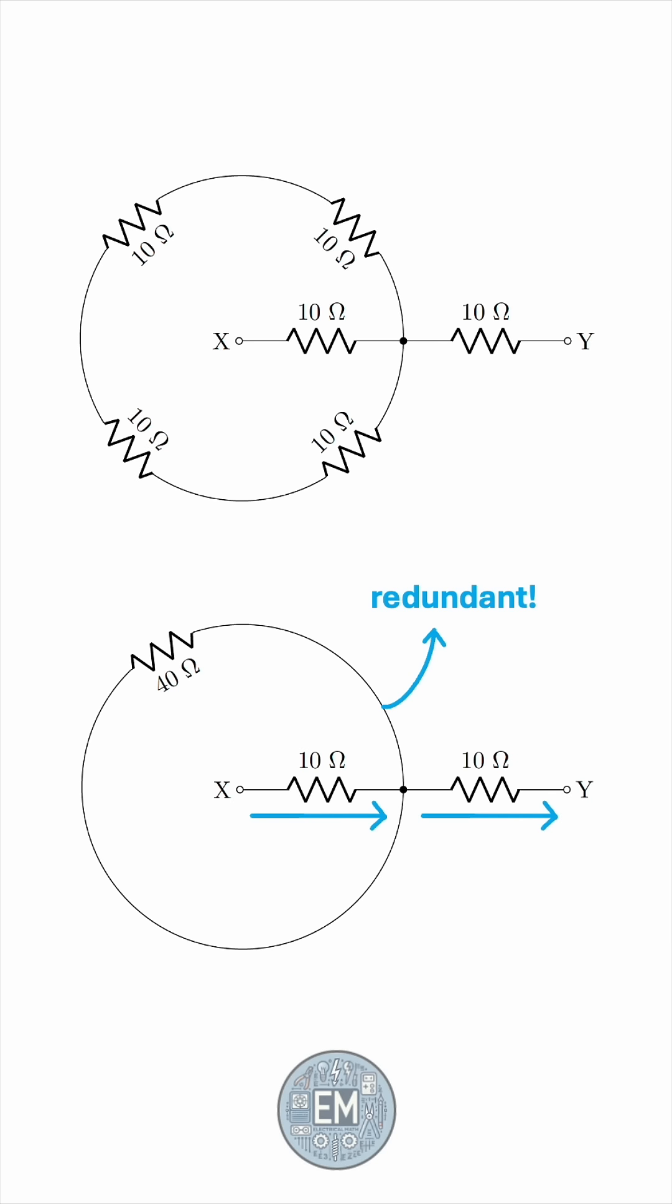Here's why. Say that the current were to split at the junction, and some part were to circulate this path. The starting point and the ending point are the same. The potential difference between a point and itself is zero, and when there's no voltage, there's no current. So, no current traverses the circular path.